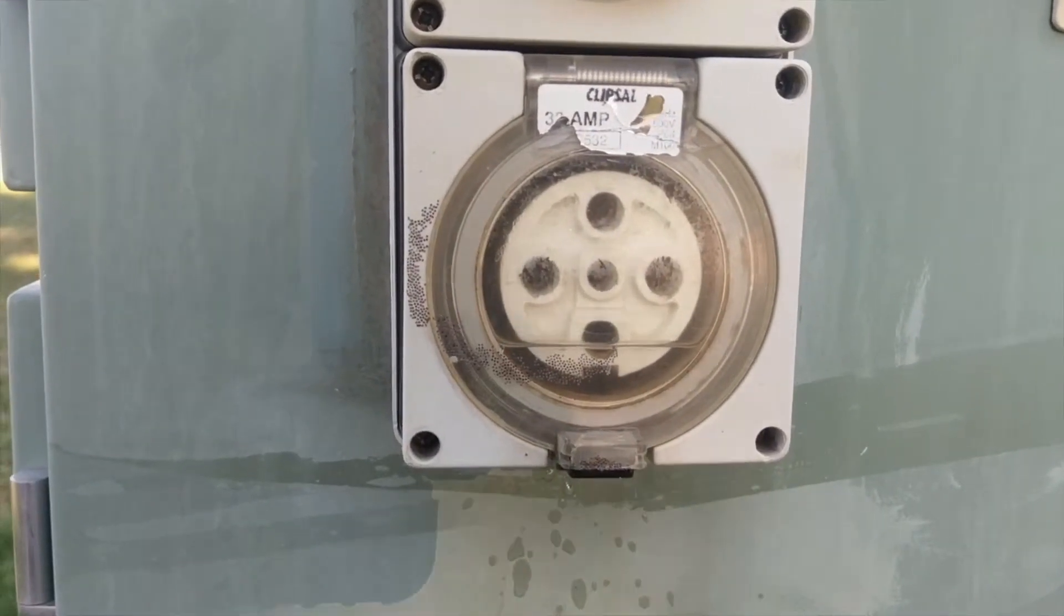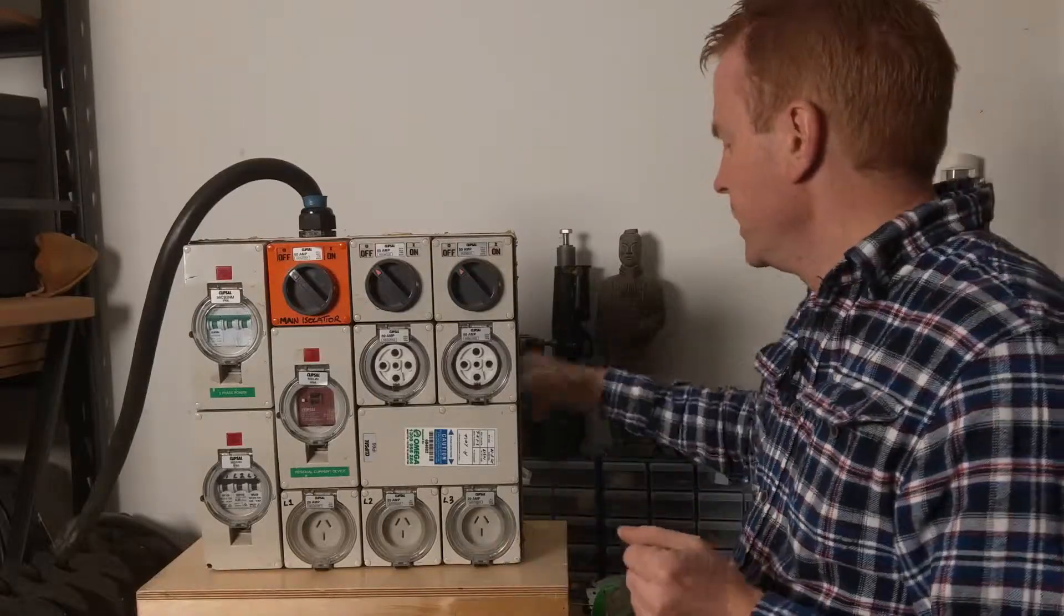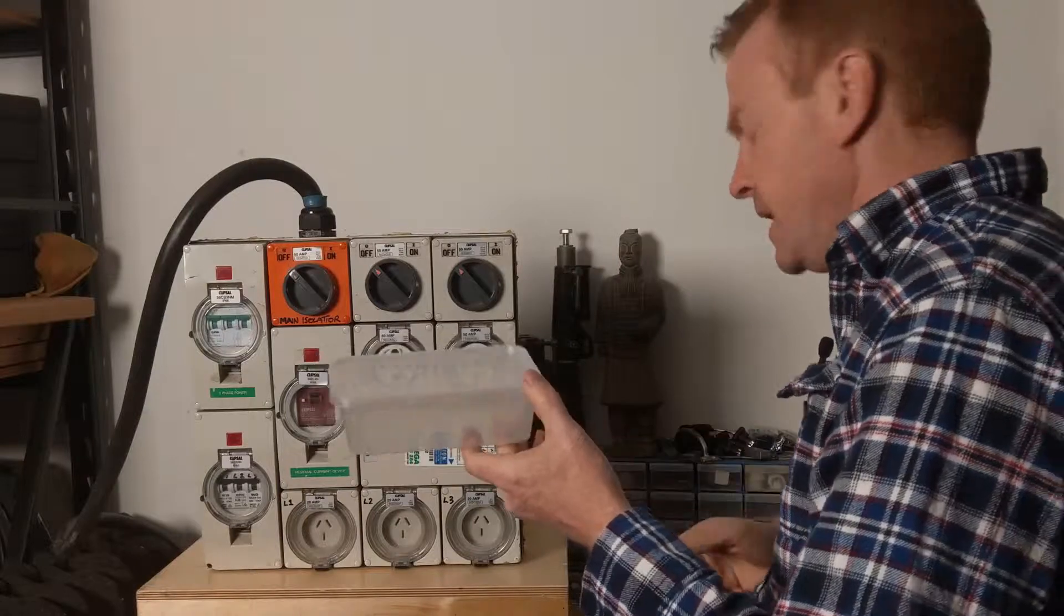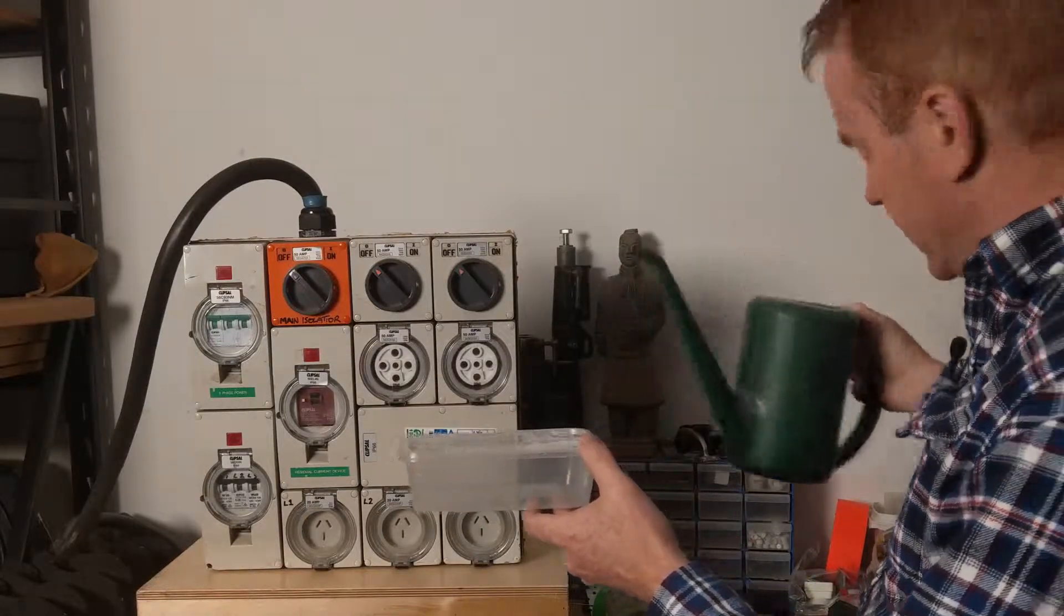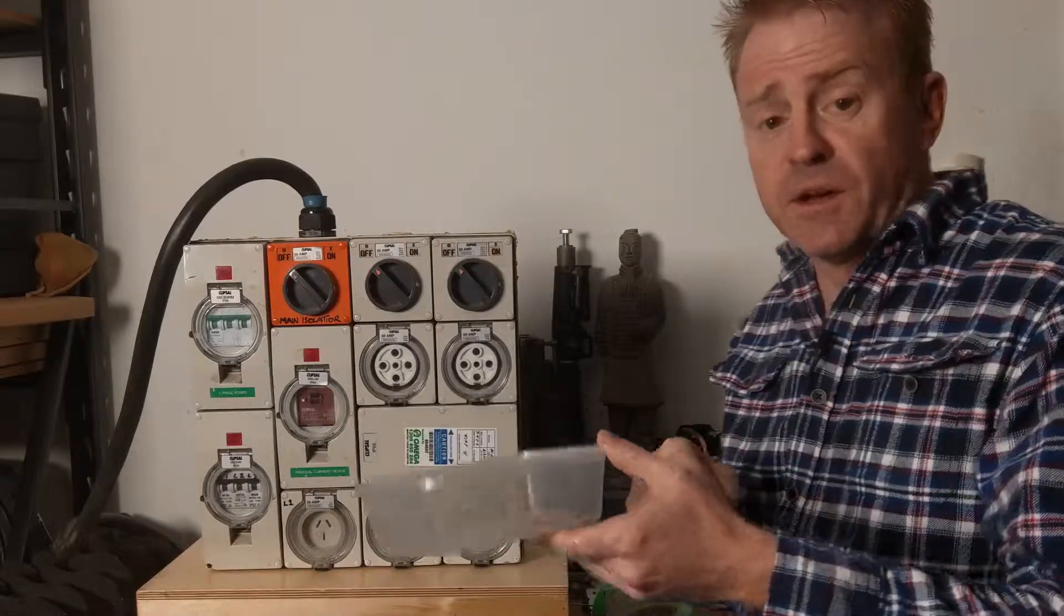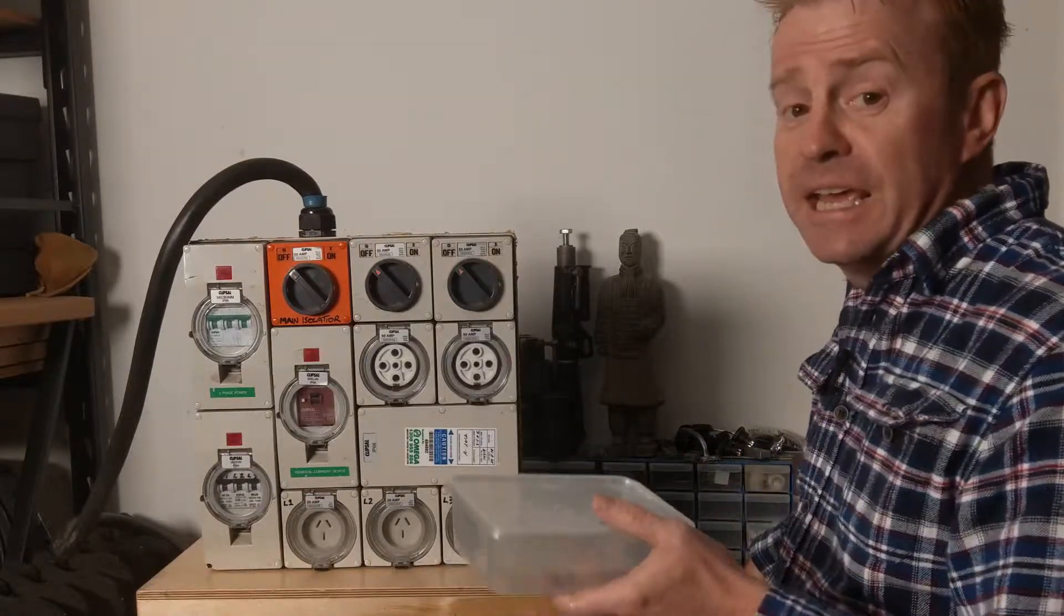So how does a waterproof outlet get water in it? Well it's really quite straightforward. So this is a waterproof container and as you can see water doesn't get inside it. It's designed not to let water in. However what happens if it gets damaged?